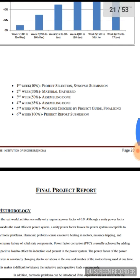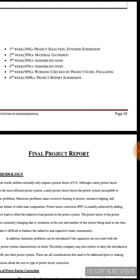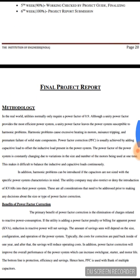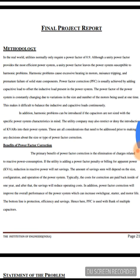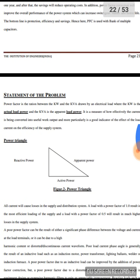In the fourth week, 65% of the work was attempted — getting assembling done. Both the third and fourth weeks cover the assembling part. In the fifth week, 90% of the work was done — work checked by the project guide and final touches given to the project. In the sixth week, the project report was made and submitted to the project guide.